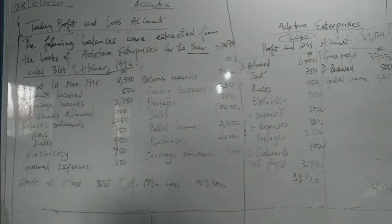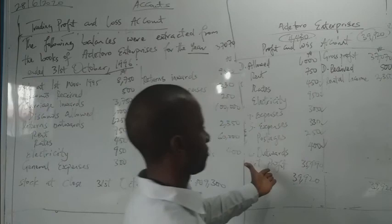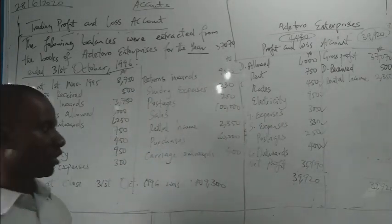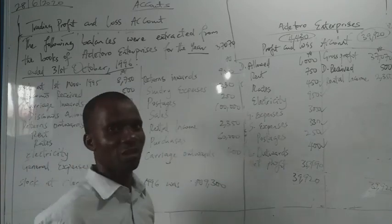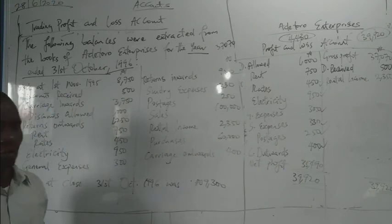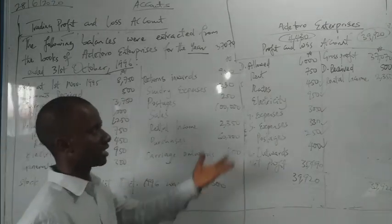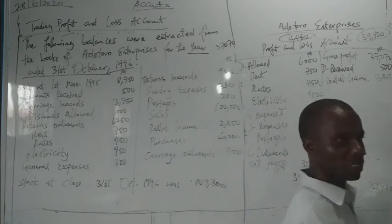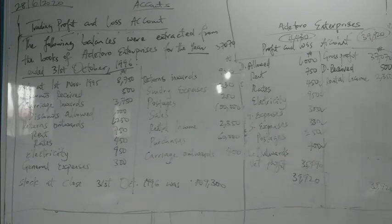So that means the business is making a profit, which is good. It depends on the target profit, because just making profit may not necessarily mean you are performing well. If you are not meeting the set profit target, or if you are surpassing your planned expense level, that means you are not performing as planned. That's it for the trading profit and loss account.